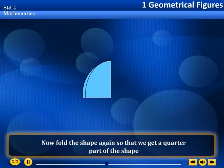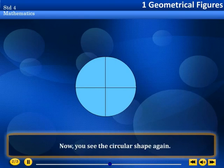Now fold the shape again so that we get a quarter part of the shape. Unfold the paper shape. Now you see the circular shape again.